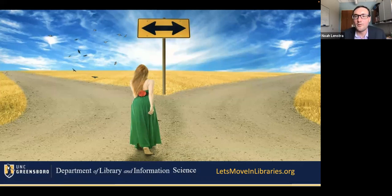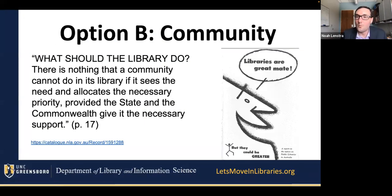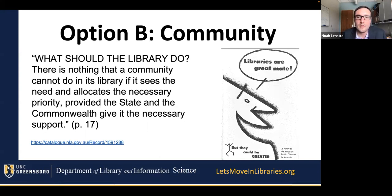Just to bring us back full circle: faced with this reality, what are we going to do with all the problems we're facing as a profession? I see two pathways. We can really double down on this back-to-basics approach — we're fundamentally about reading, maybe information as well — circle the wagons and defend that core to the exclusion of everything else. Or we could say libraries are about communities — we are part of communities, and that's the defining attribute of a library, and all success emanates from that. I'll read this quote a third time, from the national report released in Australia in the mid-1970s: 'There is nothing that a community cannot do in its library if it sees the need and allocates the necessary priority, provided the state and the Commonwealth give it the necessary support.'